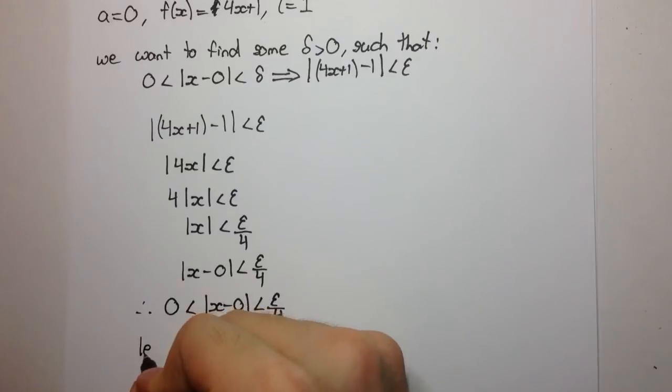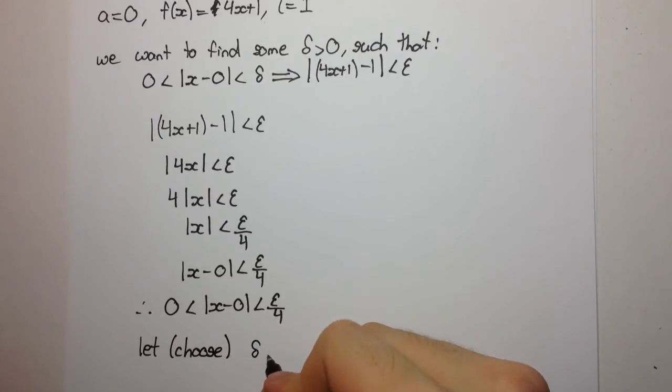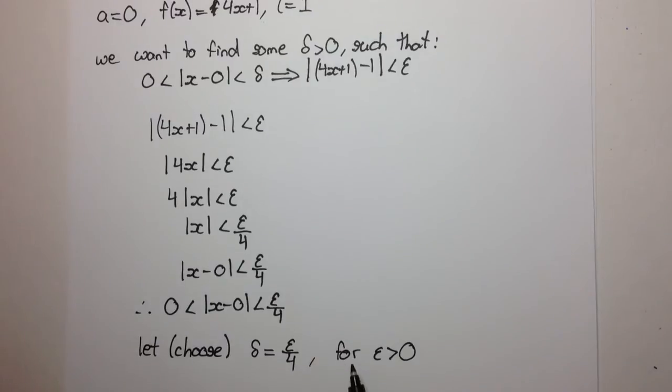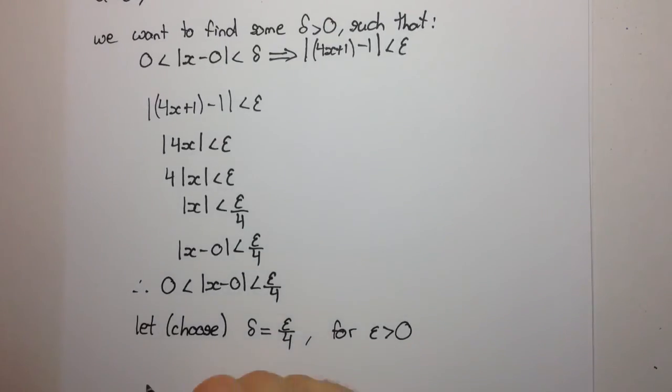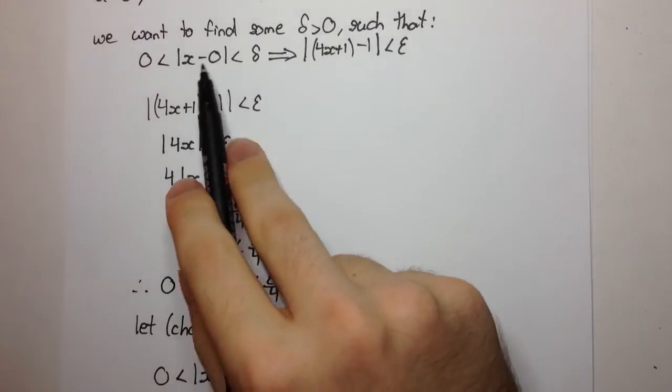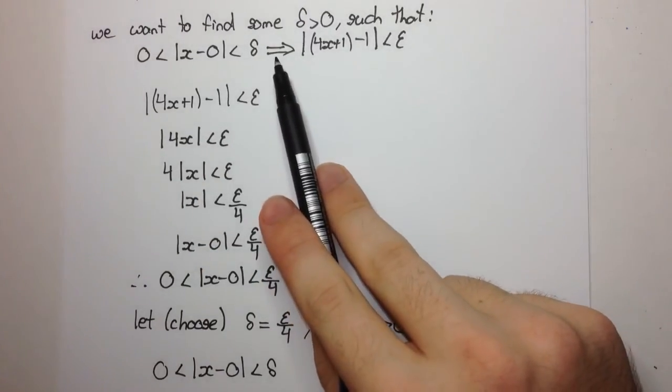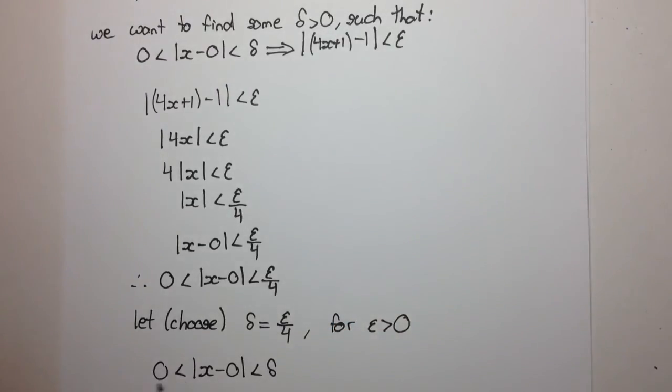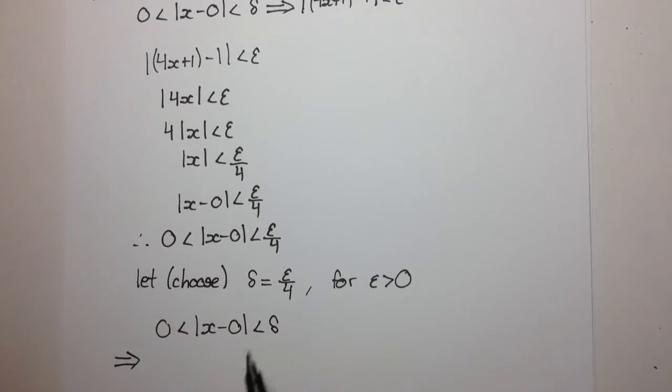So this might suggest to you that what we do is we let or choose delta equal to epsilon on 4, for epsilon greater than 0. So why do we do this? Well if we do this we're going to have 0 is less than x minus 0 is less than delta, so we're starting off with what we have here and now we work towards proving or implying that this condition holds. So let's start off here now since we let delta equal to epsilon on 4 this was by our own free choice which is what we actually need to do, we need to find and choose a delta.